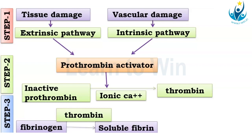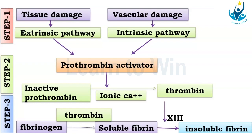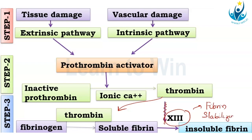Thrombin converts the inactive form of fibrinogen into the soluble form of fibrin. This soluble fibrin is then converted into the insoluble, strengthened form by Factor 13, also called fibrin stabilizing factor. Whether extrinsic or intrinsic, both pathways merge at the prothrombin activator step. The steps in the extrinsic and intrinsic pathways differ before that point, but from the formation of the prothrombin activator onward, the steps are the same.